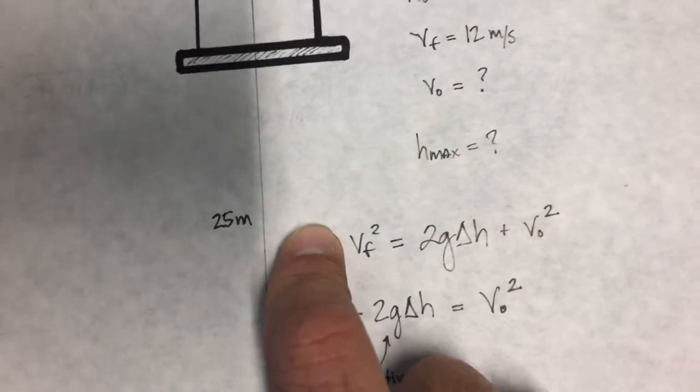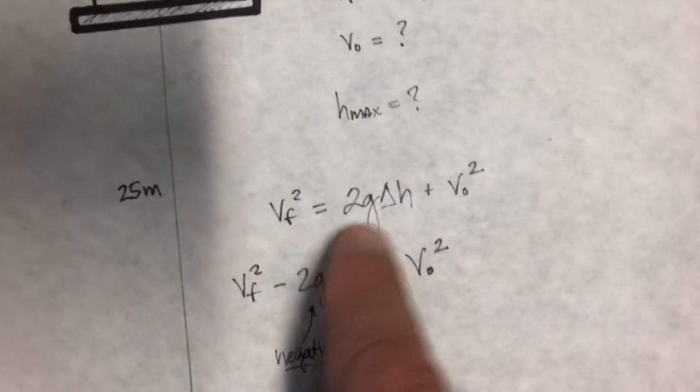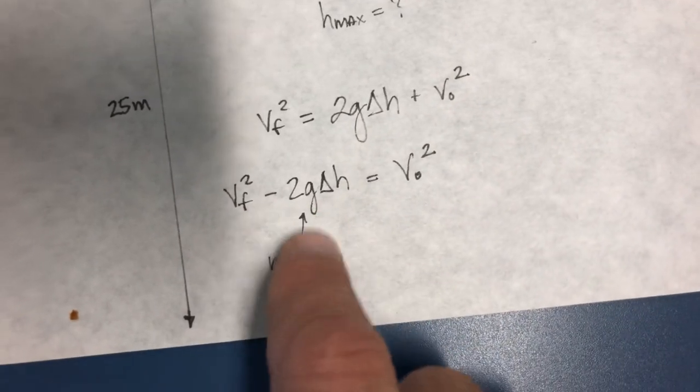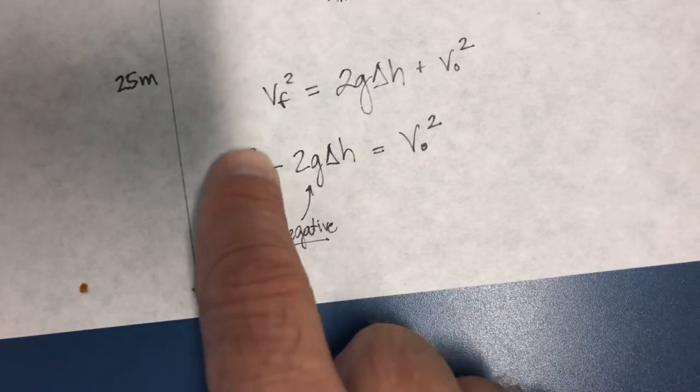So 25 meters above the thrower. Here we go: v final squared is equal to 2g change in height plus v initial squared. 2g, remember g is negative so we're subtracting a negative. So v final squared is 12 squared, 144 plus 19.6 times 25.